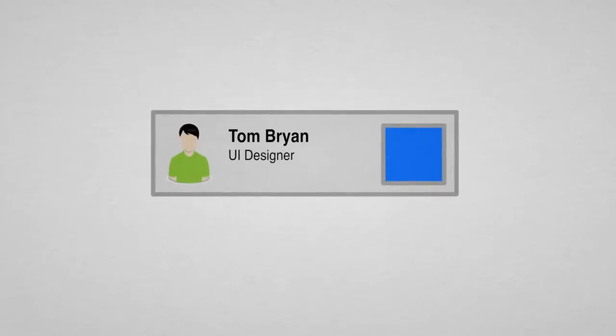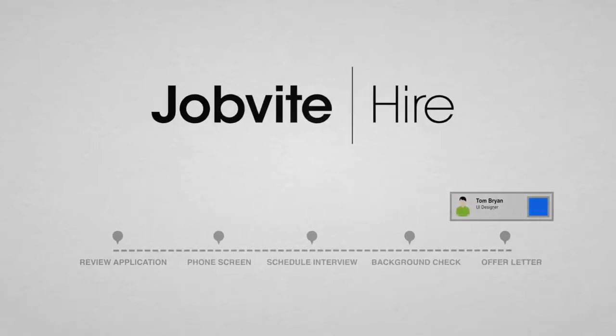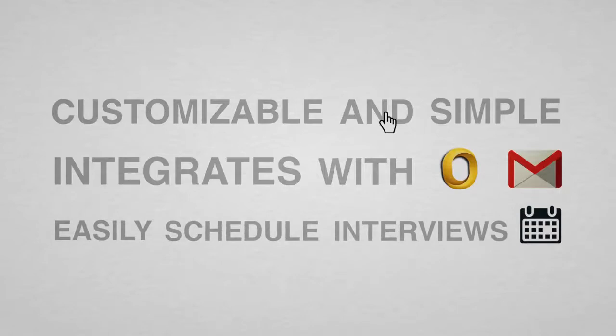Then run email campaigns with targeted landing pages and use our robust analytics to refine your approach. When you're ready to start the hiring process, you can easily source and track applicants with Jobvite Hire. It's simple to use and you can customize it to work the way you do. It even integrates with Outlook and Gmail, so you can schedule interviews without missing a beat.